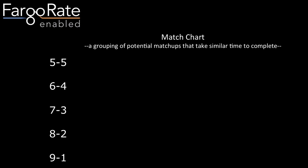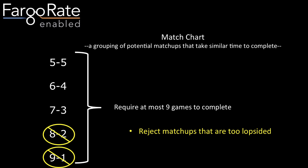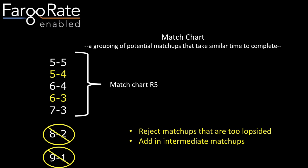Let me introduce the idea of a match chart. A match chart is a collection or grouping of potential match-ups that are expected to take a similar amount of time to complete. It's a good idea when running a tournament to have different matches at the same potential maximum time — all taking at most nine games. We reject match-ups that are too lopsided, defined as the higher-rated player needing more than three times the games of the lower-rated player — eliminating eight-to-two and nine-to-one. Adding intermediate match-ups five-to-four and six-to-three, we call these five matches 'match chart R5,' based upon a base race to five.